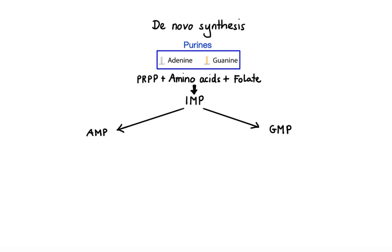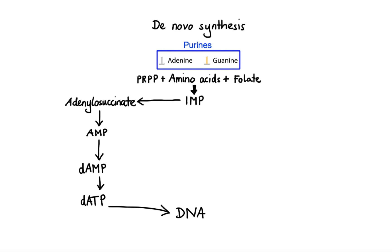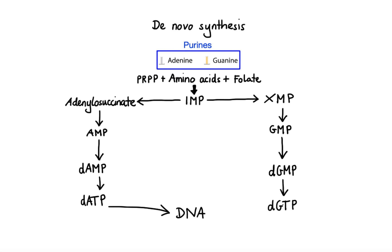Conversion of IMP to AMP requires a synthase enzyme that converts IMP to adenylosuccinate, and then a lyase enzyme that converts adenylosuccinate into AMP. AMP can then be reduced to deoxy-AMP and further converted to deoxy-ATP, which can be incorporated into DNA. Alternatively, conversion of IMP to GMP requires a dehydrogenase enzyme that catalyzes the conversion of IMP to xanthosine monophosphate (XMP), which serves as a substrate for the production of GMP. Likewise, GMP can be reduced to deoxy-GMP and then converted into deoxy-GTP, which is incorporated into DNA.